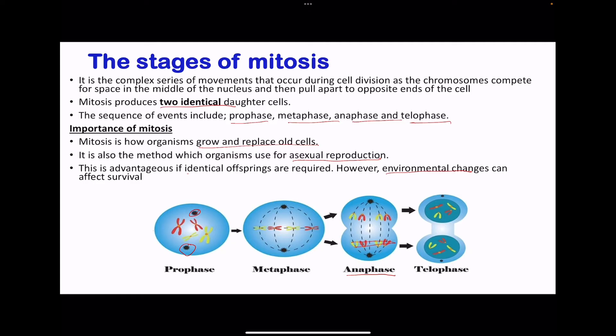Next, we go to telophase. During telophase, the sister chromatids have now become individual chromosomes. The spindle fibers break down and are no longer visible. The nuclear envelope forms around the chromosomes. The centrioles are reformed, and the chromosomes become less condensed and harder to see.